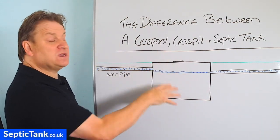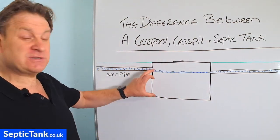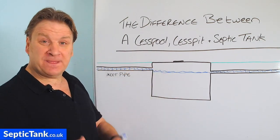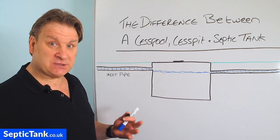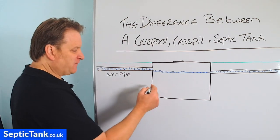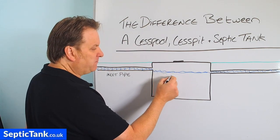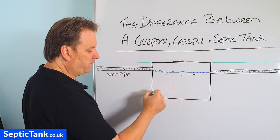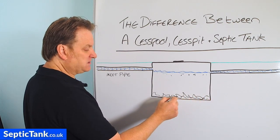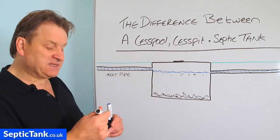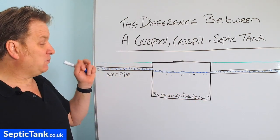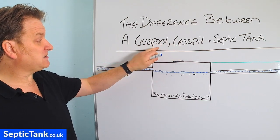So the cesspit will always stay about three quarters full of liquid. Over time, all the debris from your household wastewater — fat, grease, sludge, poo, vegetable peelings, stuff like that — some bits will float on the surface, but the majority will fall to the bottom and build up as sludge. Once a year you'd get a tanker in and he'd put his pipe in and suck all this sludge out. So we've looked at a cesspool and a cesspit.